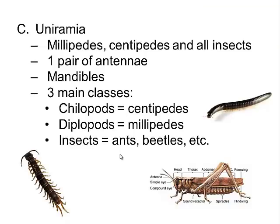The third subphylum is the uniramians, which includes all insects as well as millipedes and centipedes. Millipedes have a thousand legs and centipedes a hundred — though they don't actually have exactly that many. They have one pair of antennae and mandibles. They are made up of three main classes. The key feature to remember is one pair of antennae and three body segments: head, thorax (the chest), and abdomen (the belly).